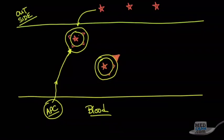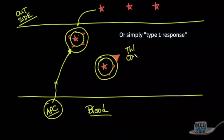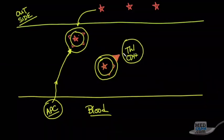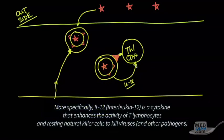The TH1 response is a type 1 response in CD4-positive T helper cells, providing cellular-mediated immunity. CD4-positive TH1 cells are bound to be found interacting with the antigen-presenting cells, so that CD4-positive cells will respond to the virus.